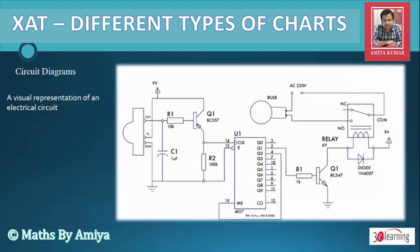Next is the Circuit Diagram — the most used diagram in physics. I doubt this would appear in JAT, but if it does, it might come in decision making, asking at which step what we have to do. They will give you a complete description of the chart.